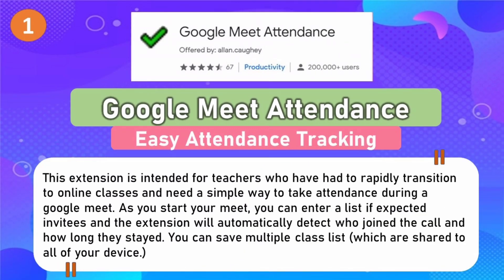Number 1: Google Meet Attendance — for easy attendance tracking. This extension is intended for teachers who have had to rapidly transition to online classes and need a simple way to take attendance during a Google Meet. As you start your Meet, you can enter a list of expected invitees and the extension will automatically detect who joined the call and how long they stayed. You can save multiple class lists which are shared to all of your devices.